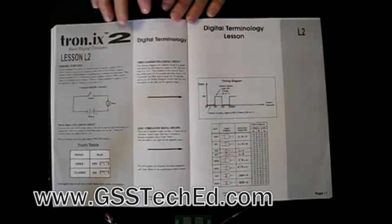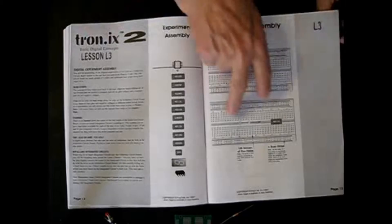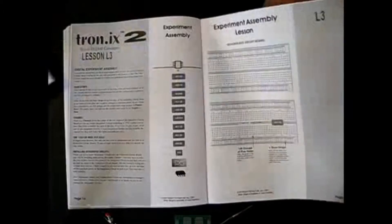Then turning the page, we show you some of the terminology and explain to you some of the terminology that is used in digital electronics. As we go on to the next page, lesson three, we talk about how we use the solderless breadboard to put our parts in here to build the circuits.